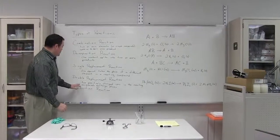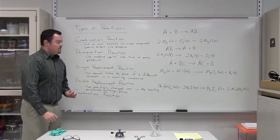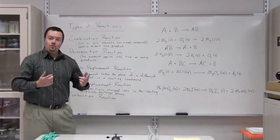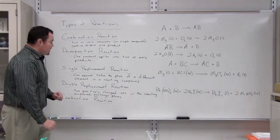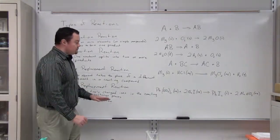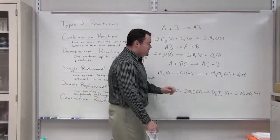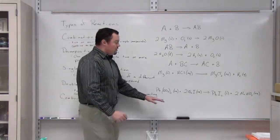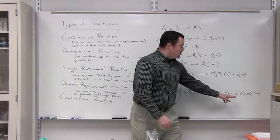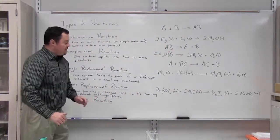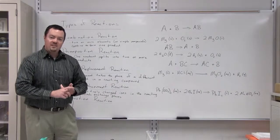Our fourth type of reaction is known as a double replacement reaction. It's somewhat similar to a single replacement reaction, except that two items from the reaction switch places — specifically, two positively charged ions in the reacting compounds switch places with each other. An example is taking lead nitrate and mixing it with sodium iodide, forming two new products: lead iodide and sodium nitrate.